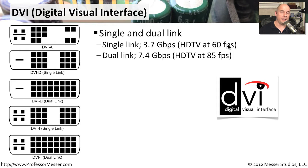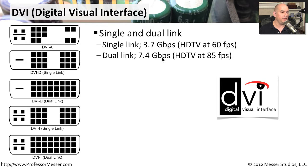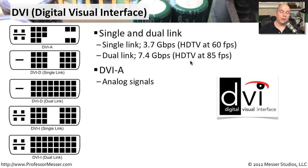Sometimes you need more data to be sent through. Those are sent over dual link connections at 7.4 gigabits per second, effectively twice as much, capable of doing HDTV at 85 frames per second.